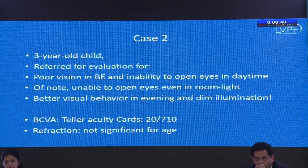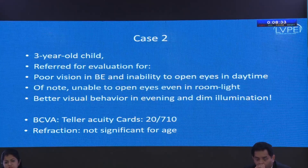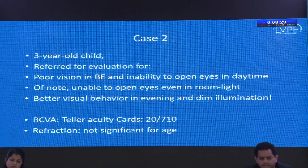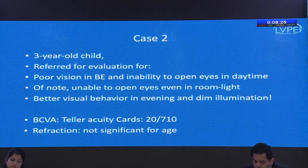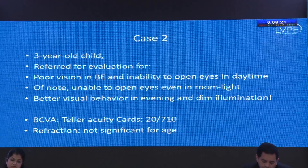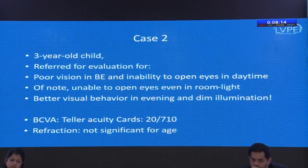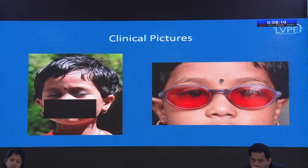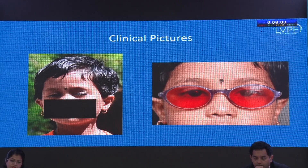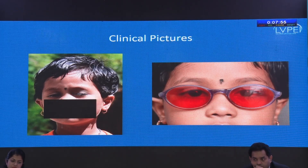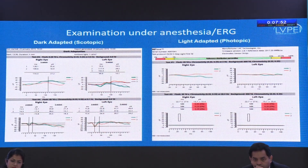Moving to the second case: a three-year-old child referred for evaluation of poor vision in both eyes and inability to open eyes in broad daylight. The child was unable to open eyes even in room light, with better visual behavior in the evening and dim illumination. Visual acuity by Teller acuity was subnormal at 20/710. A representative photograph shows the child has great difficulty opening eyes in broad daylight, but using special glasses with red filters, the child is able to open the eyes in daylight.